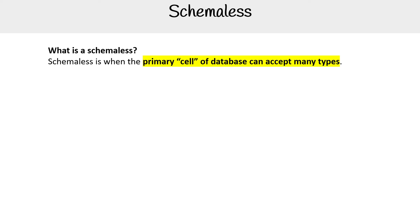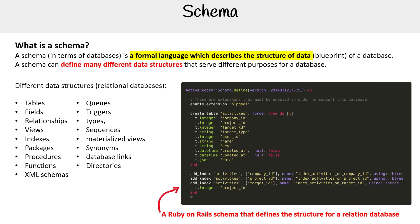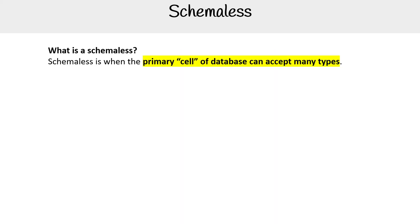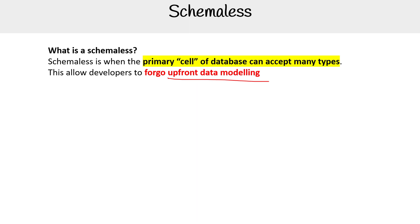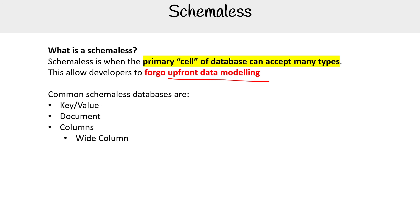The primary cell of a database can accept many types. Going back here for a moment, notice that we have very particular data types like integer, string, and so on. With schema-less, that data type is a lot more flexible, and the idea is it allows you to forego the upfront data modeling that you normally would have to do, which is a lot of work. That's one of the advantages of schema-less. Common schema-less databases would be key-value, document, column — with the subcategory of wide columns — and graph.